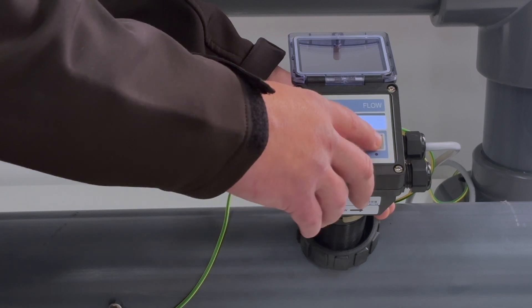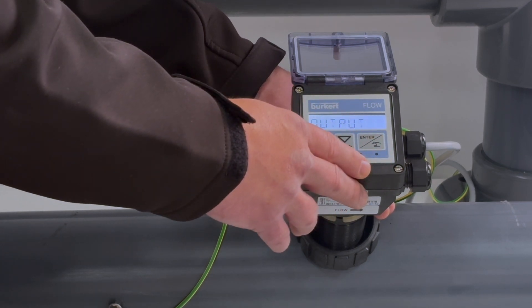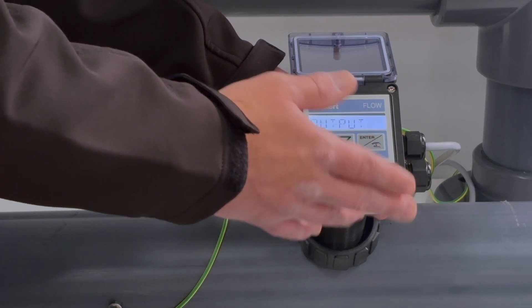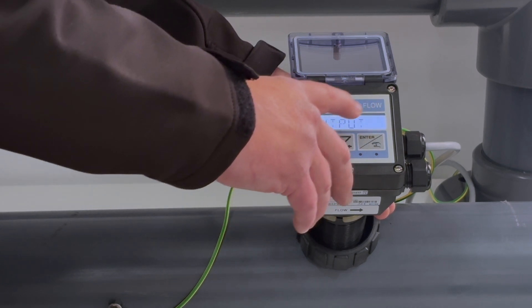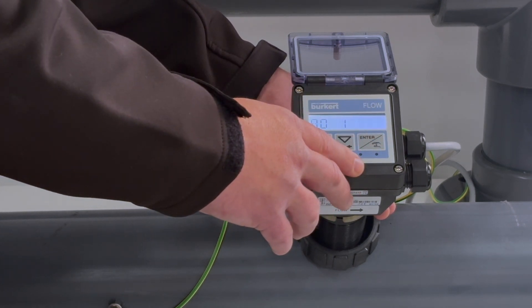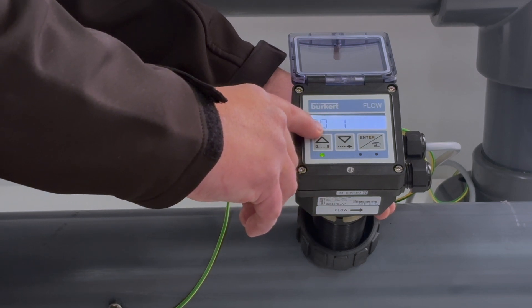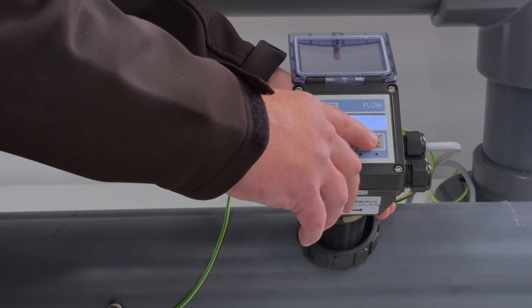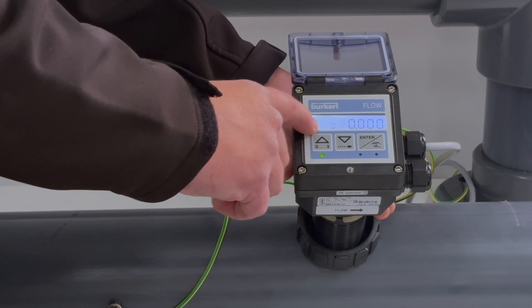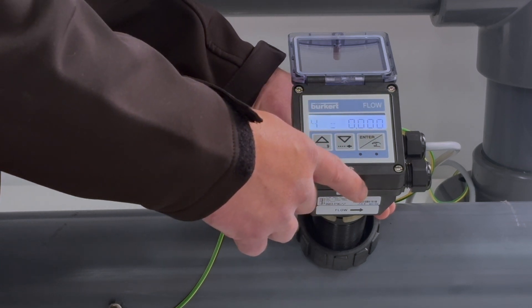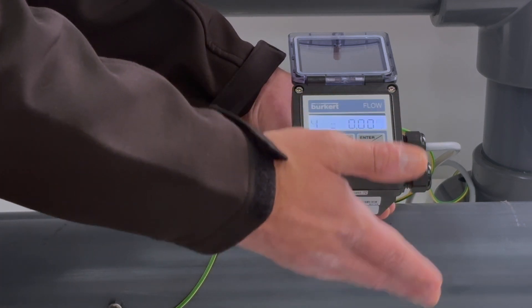I'm going to return back to the main menu and set my outputs. Now the main two outputs we want to set here are the 4 to 20 and the pulse outputs. Press enter on the outputs menu. My AO or analog output 1 will be my current. My 4 milliamps I'm in this case going to set to 0 liters a minute, which is corresponding to the unit that we set previously.